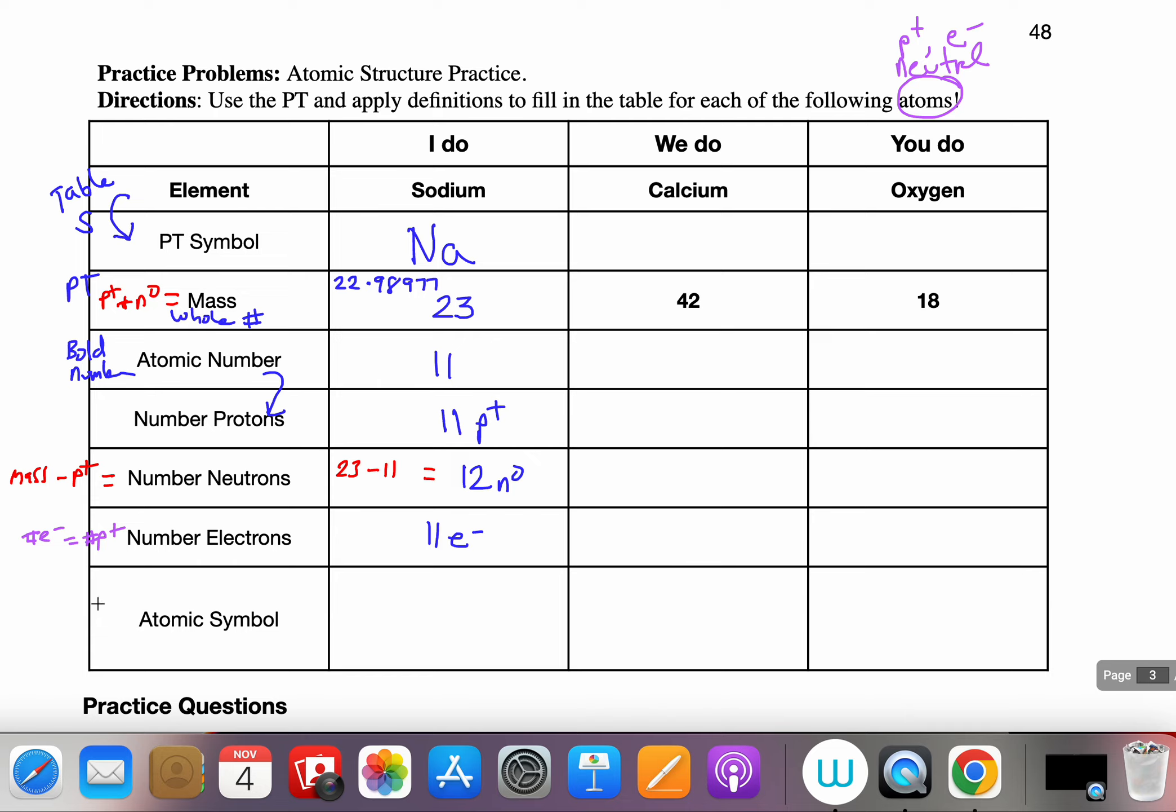The atomic symbol would be what we see on the previous page. X for the symbol and then we need A and Z information. So my symbol is Na for this particular structure sodium. A represents the position of the mass value which is 23, and Z represents the atomic number which is 11.